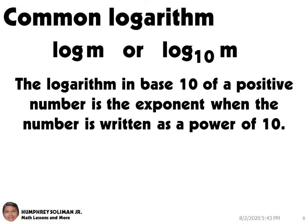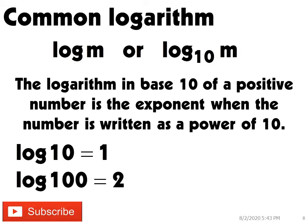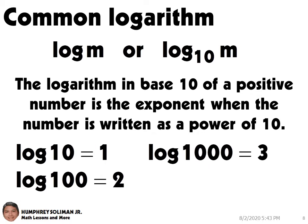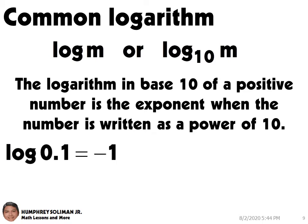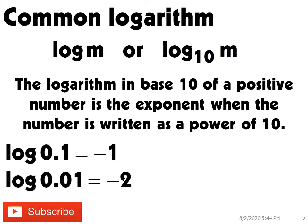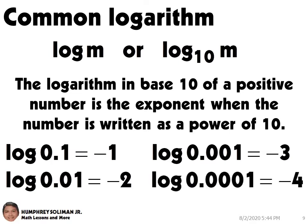The logarithm in base 10 of a positive number is the exponent when the number is written as a power of 10. Log 10 equals 1. Log 100 equals 2. Log 1000 equals 3. Log 10000 equals 4. Also, log 0.1 equals negative 1. Log 0.01 equals negative 2. Log 0.001 equals negative 3. Log 0.0001 equals negative 4.